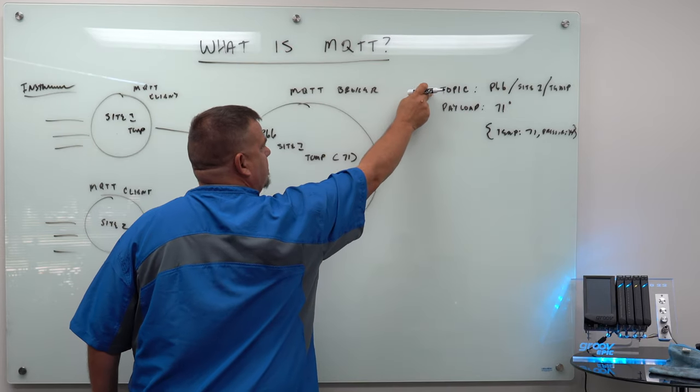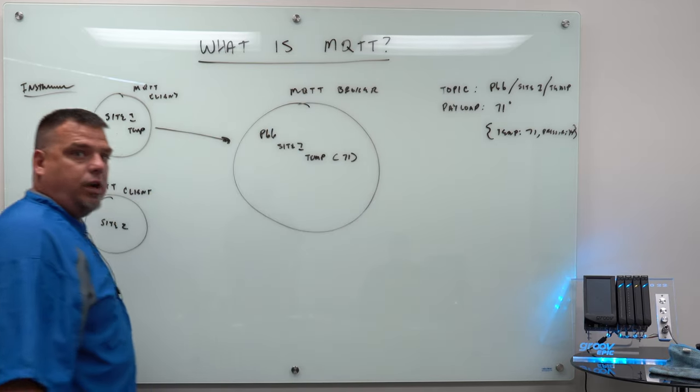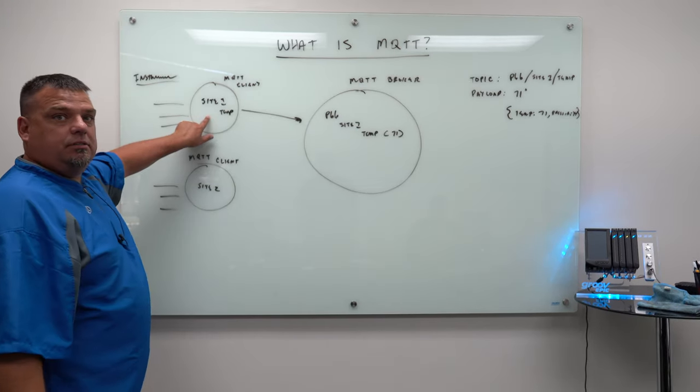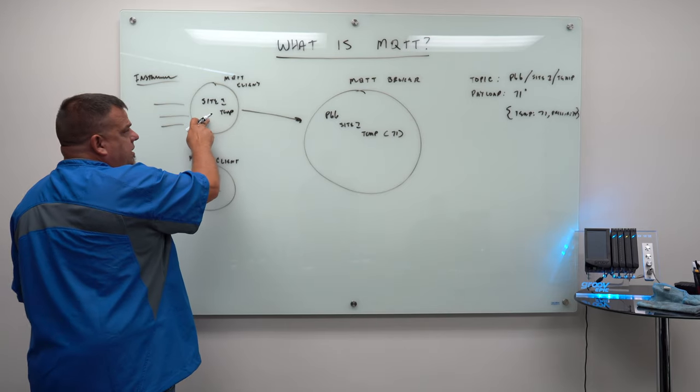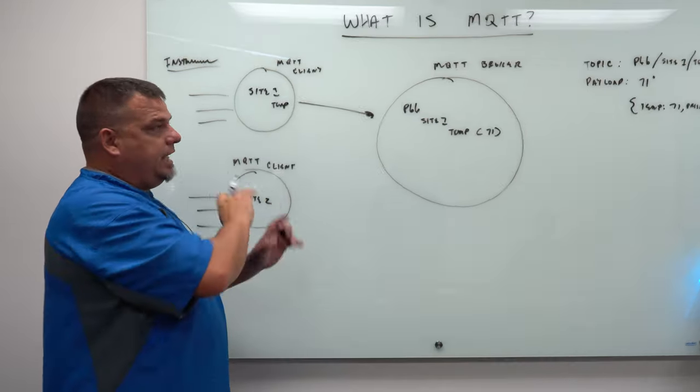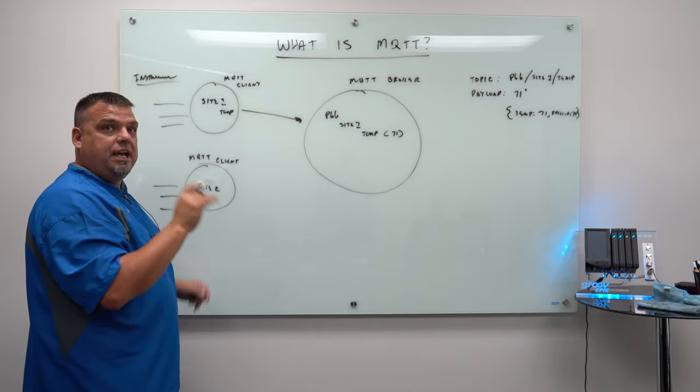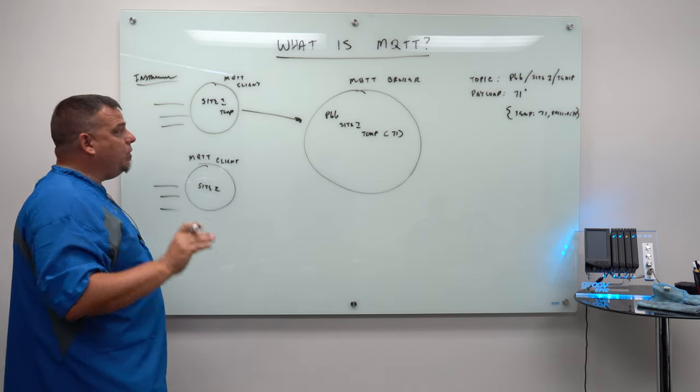So if the temperature in site one, every time the temperature changes, I publish to the broker, my connection to the broker, hey, topic P66 site one temp has changed. New value is 71 report by exception. The client, the MQTT client, if the next time it checks the sensor, the value is 71, it does not publish an update.